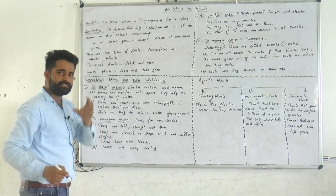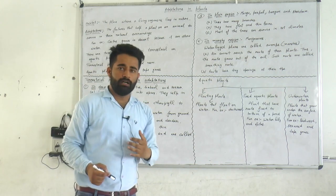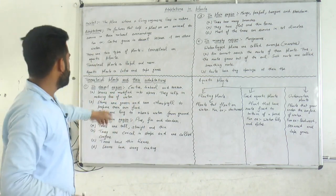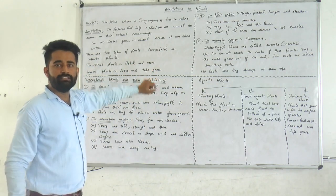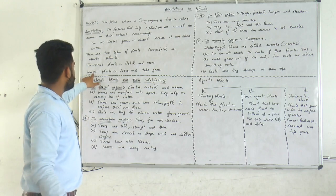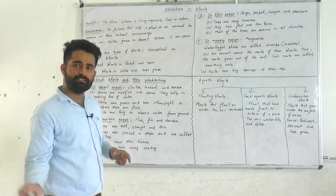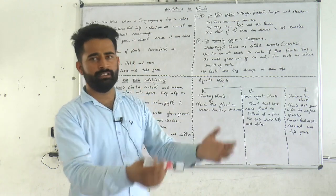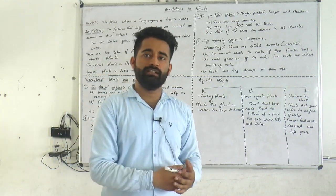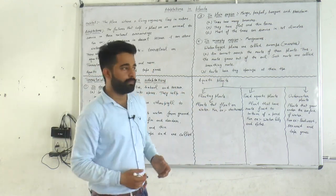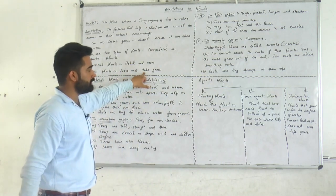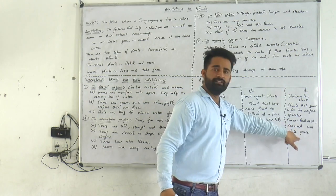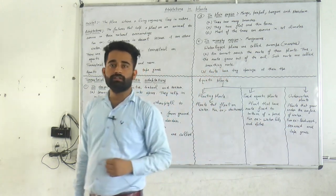What are terrestrial plants? The plants that grow on land are called terrestrial plants. For example, pipal and neem are terrestrial plants. And what are aquatic plants? The plants that grow in water are called aquatic plants. For example, lotus, tape grass, duckweed, water lily, pondweed, and seaweed — these are all aquatic plants.